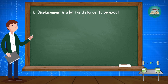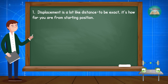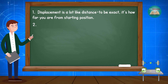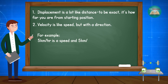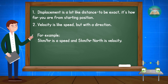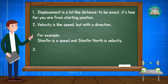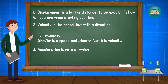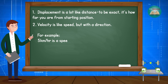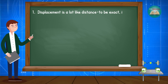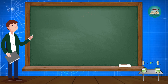Displacement is a lot like distance — to be exact, it's how far you are from your starting position. Velocity is like speed but with a direction. For example, 5 km per hour is a speed, and 5 km per hour north is velocity. Acceleration is the rate at which velocity is changing. So we were talking about displacement, velocity, and acceleration.